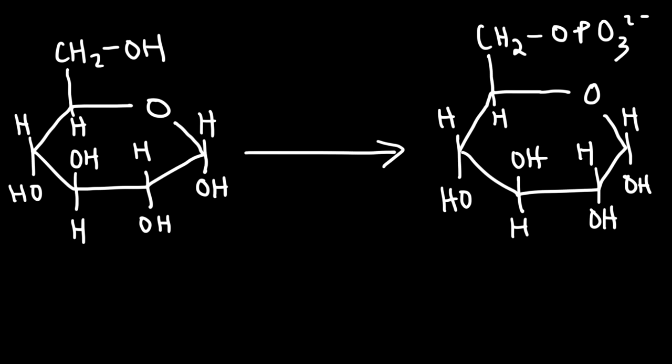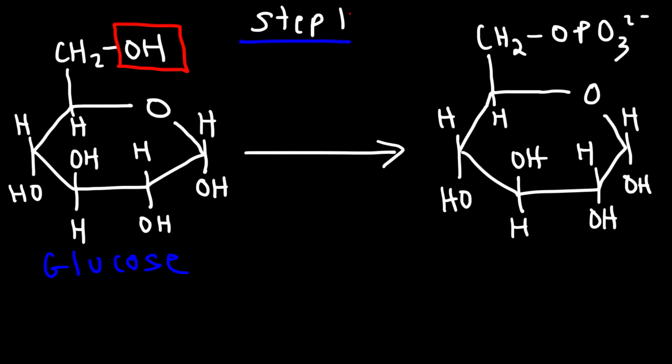Now let's go over the ten steps of glycolysis. In step one, we begin with a molecule of glucose on the left. Notice that a hydroxyl group is replaced with a phosphate group. The product has a phosphate group attached to carbon 6, so this is called glucose-6-phosphate.